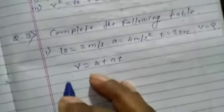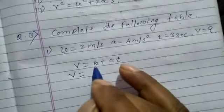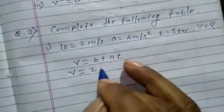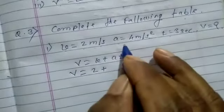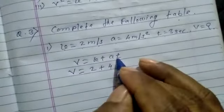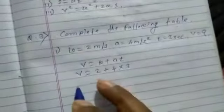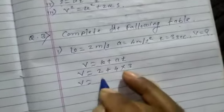Therefore v equals u, which is 2, plus a, the value of acceleration is 4, into t, which is 3 seconds.